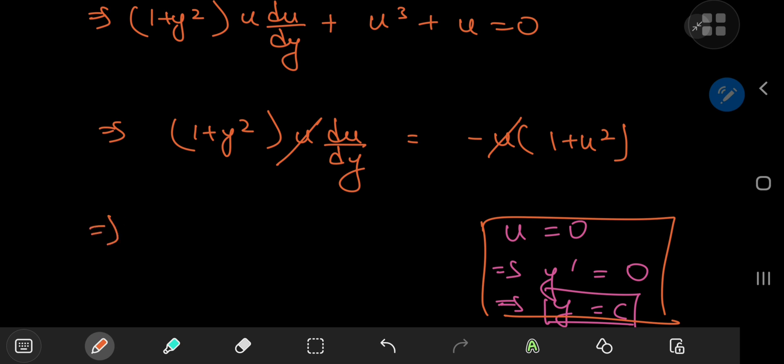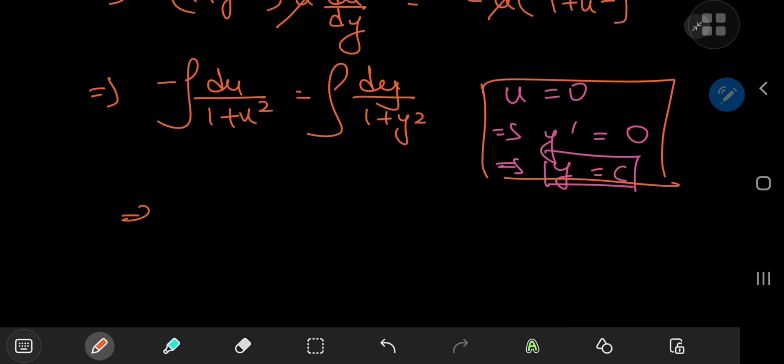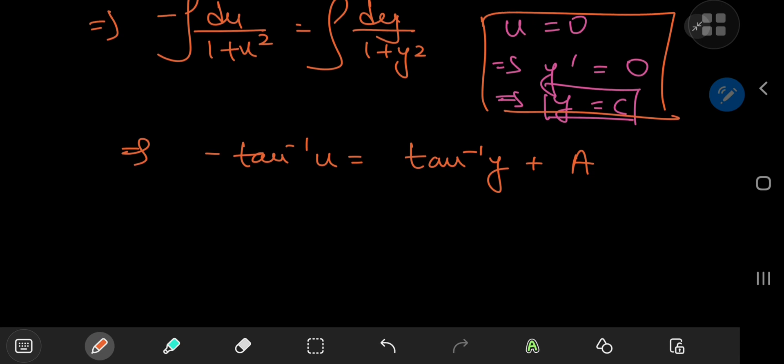So on rearranging things, because we have a nice separable differential equation, let's write this as du by (1 + u²) equal to dy divided by (1 + y²). And let me take the negative sign here. Integrating with respect to each variable, we get the negative of the inverse tangent of u on the left, and the inverse tangent of y on the right plus some constant of integration that I'm going to call a.